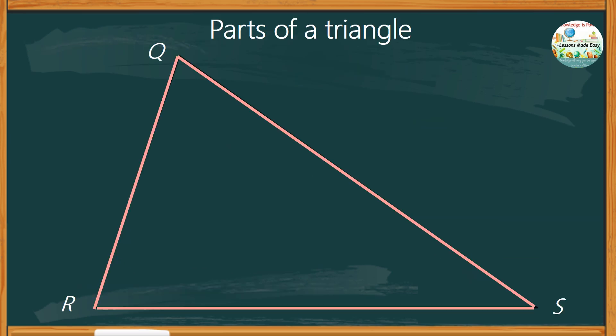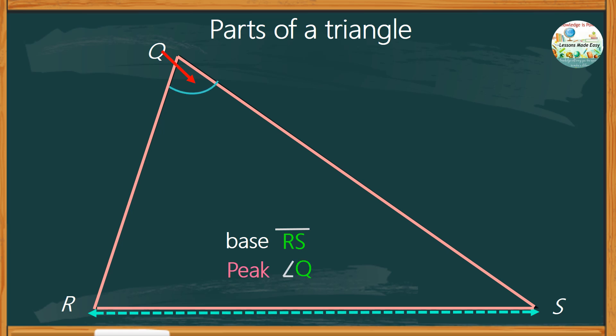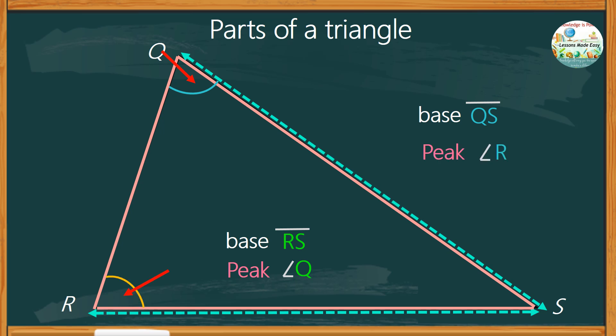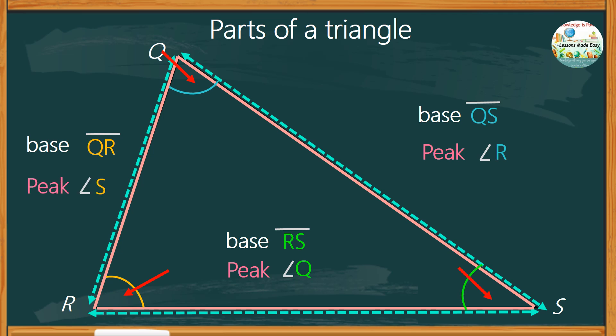Since the peak is always opposite the base, the peak angle may change depending on the base. For example, if the base is line segment RS, then the peak is angle Q. If the base is line segment QS, then the peak is angle R. And if the base is line segment QR, then the peak is angle S.